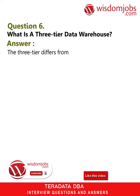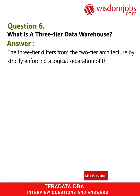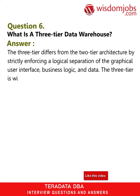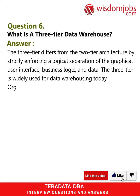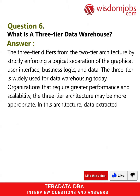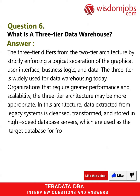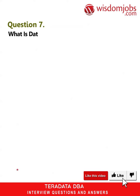Question 6: What is a three-tier data warehouse? Answer: The three-tier differs from the two-tier architecture by strictly enforcing a logical separation of the graphical user interface, business logic, and data. It is widely used for data warehousing today by organizations that require greater performance and scalability. In this architecture, data extracted from legacy systems is cleansed, transformed, and stored in high-speed database servers, which are used as the target database for front-end data access.